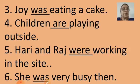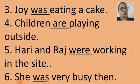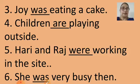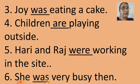Joy was eating a cake. Here the action word is 'eating', the subject is 'Joy', and the word helping the verb is 'was' — so 'was' is the helping verb. Fourth: Children are playing outside. The helping verb is 'are', and it is helping the verb 'playing', which is the action word.